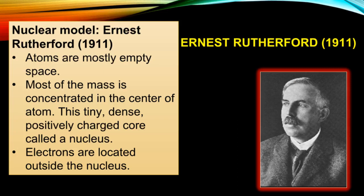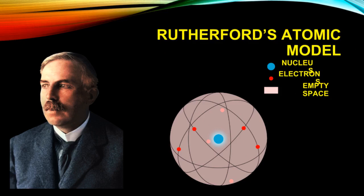The third is Rutherford's atomic model, one of the earlier atomic models. The model was proposed by Ernest Rutherford in 1911. It was revolutionary at the time and made a major breakthrough in the atomic world. Atoms are mostly empty space; most of the mass is concentrated in the center of the atom in a tiny, dense, positively charged core called the nucleus, while electrons are located outside the nucleus.